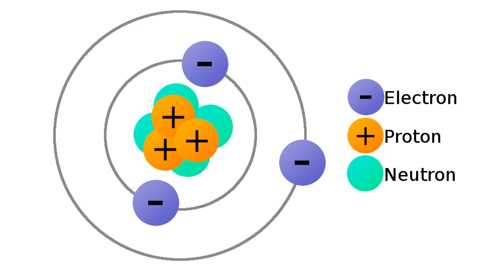Atoms themselves consist of three types of subatomic particles: positively charged protons, negatively charged electrons, and non-charged neutrons. Neutrons and protons make up the nuclei, or the centers of the atoms, and the electrons occur in a cloud around the nuclei, orbiting the nuclei like planets.